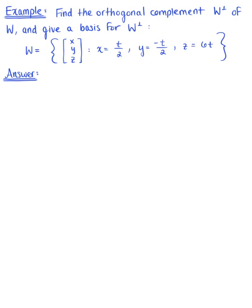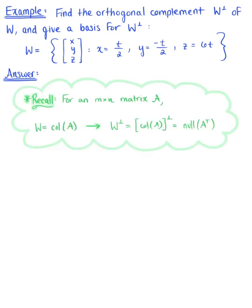Find the orthogonal complement W perp of subspace W and give a basis for this orthogonal complement. To get us started, let's begin by recalling that for an m by n matrix A, that subspace W is equal to the column space of matrix A, and that the orthogonal complement of W is equal to the null space of A transpose.